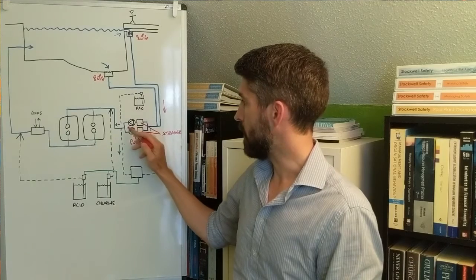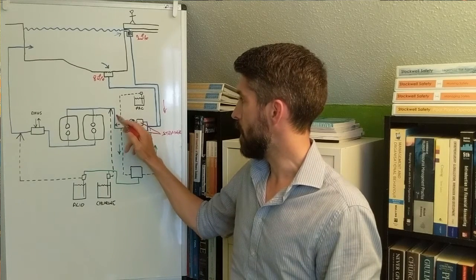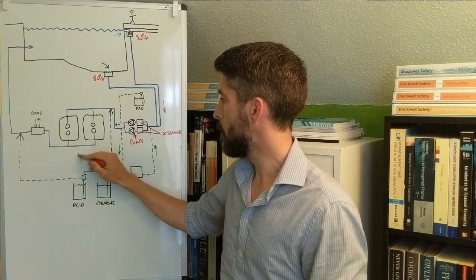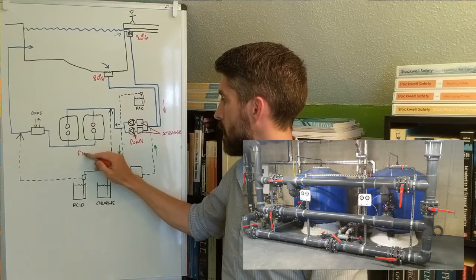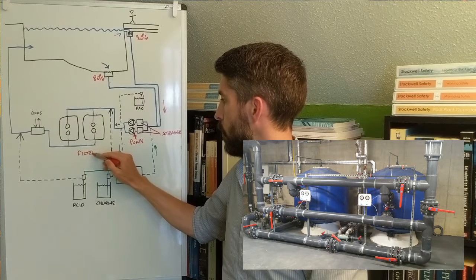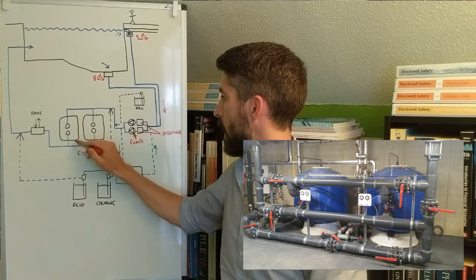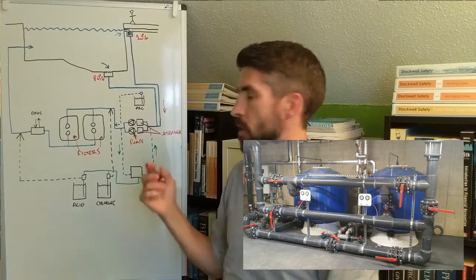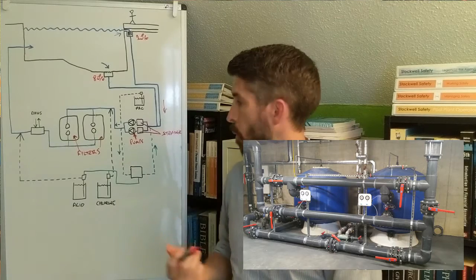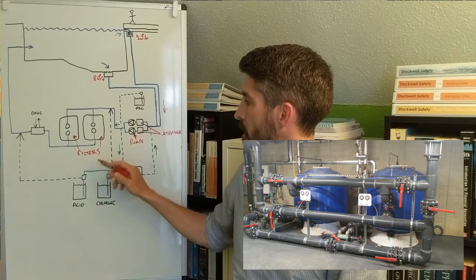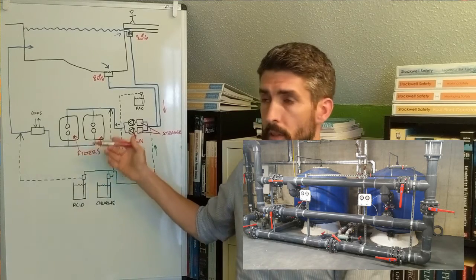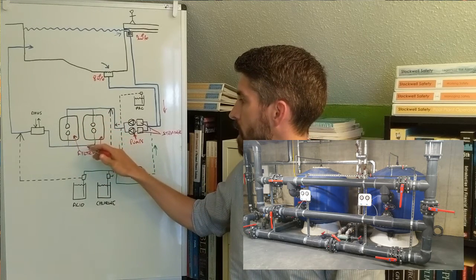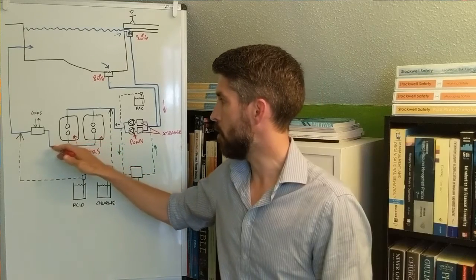What happens after the pumps, the water goes through into the filters. On this particular schematic, I've included two filters working in parallel. Some systems only have one filter, some systems have more than two. It really depends on the size of the pool and the usage. It goes in at the top of the filters, out at the bottom.